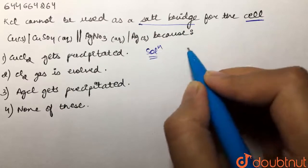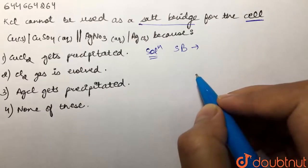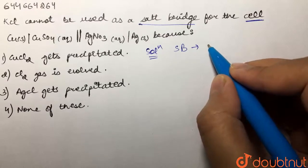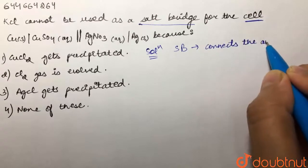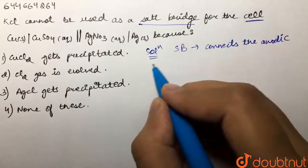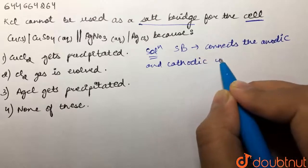First of all, we will see what is the salt bridge. Salt bridge is basically the junction that connects the cathodic and anodic compartments in the cell.